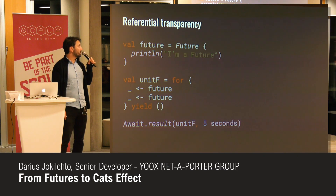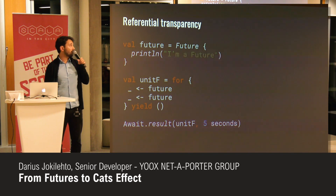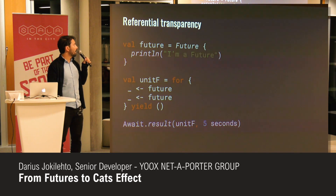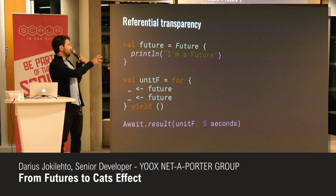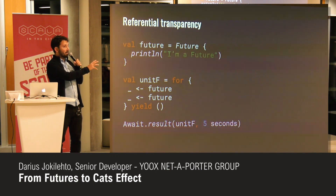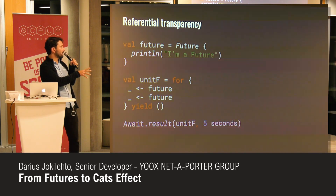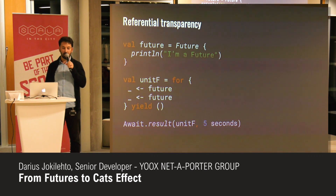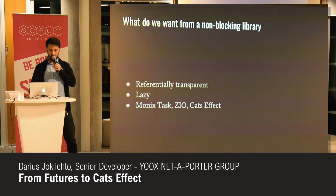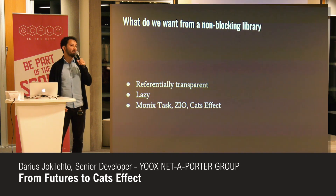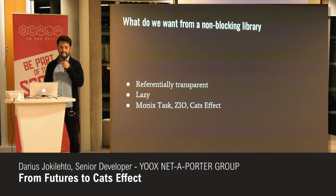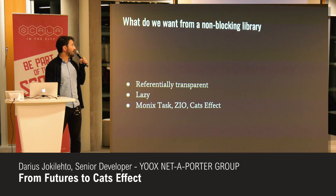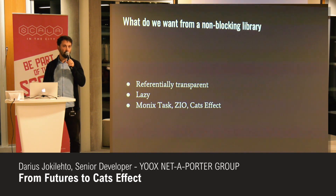A quick word on referential transparency. This is an example where we create a Future with a side effect and assign that to a value, then run the value twice. What happens? The side effect gets evaluated once. This breaks referential transparency. What we do want from a non-blocking library is something that's referentially transparent, which often goes hand in hand with laziness, and that allows us to reason about the code with our assumptions holding.